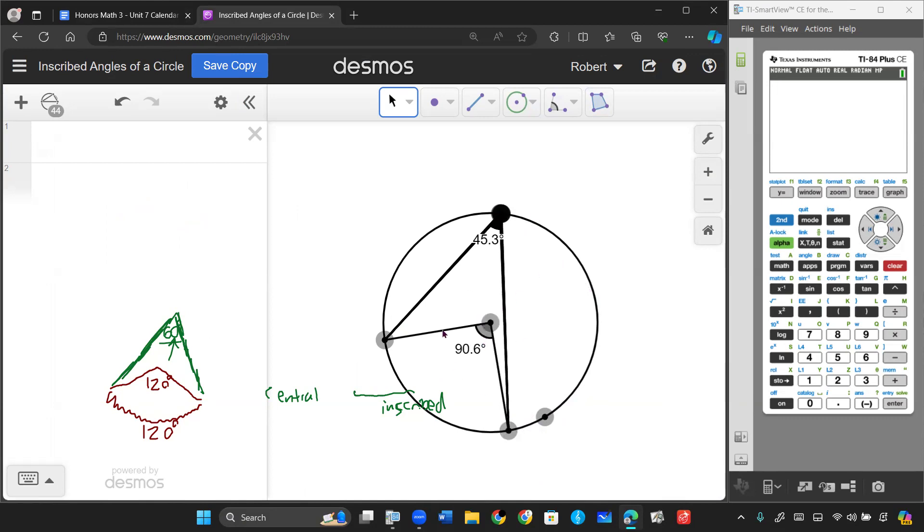But if I keep this central angle fixed and I move the inscribed angle, that's not going to change. No matter where I bring it around the circle, it will always be half of the angle, provided that it opens to the same arc the central angle opens up to. So just a great visualization.